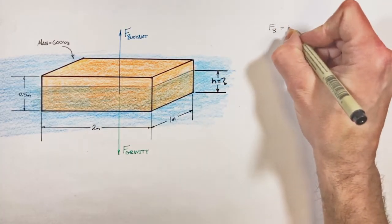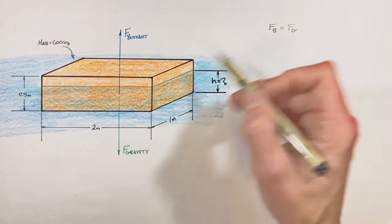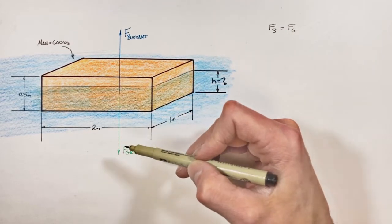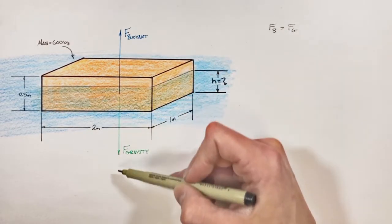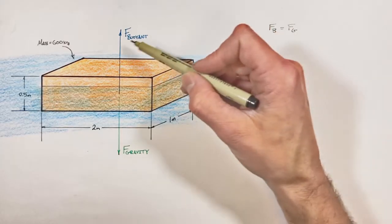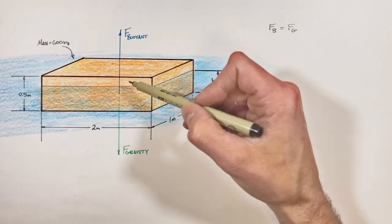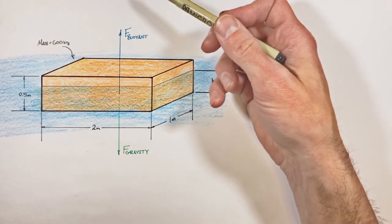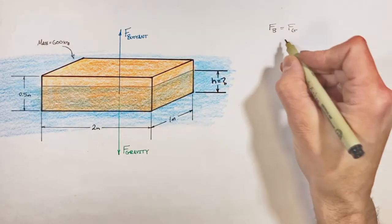greater than the buoyant force, the block would sink further down into the water, or if the buoyant force is greater than the force by gravity, this thing would take off like a rocket and that'd be weird. So first